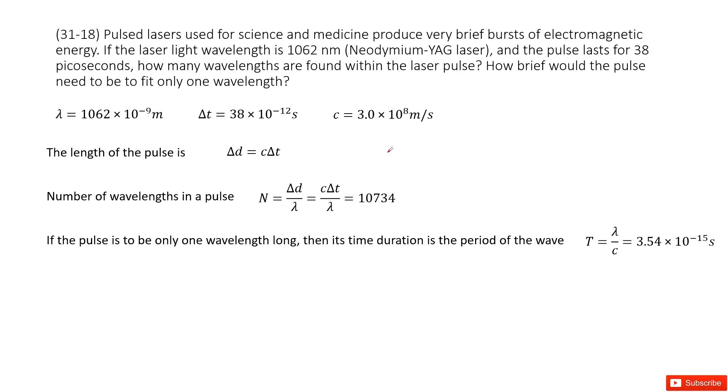Now we talk about laser. The laser light wavelength is given there. The laser's time duration is delta T. We can get it there. It tells you 38 picoseconds. So we convert the unit to seconds.